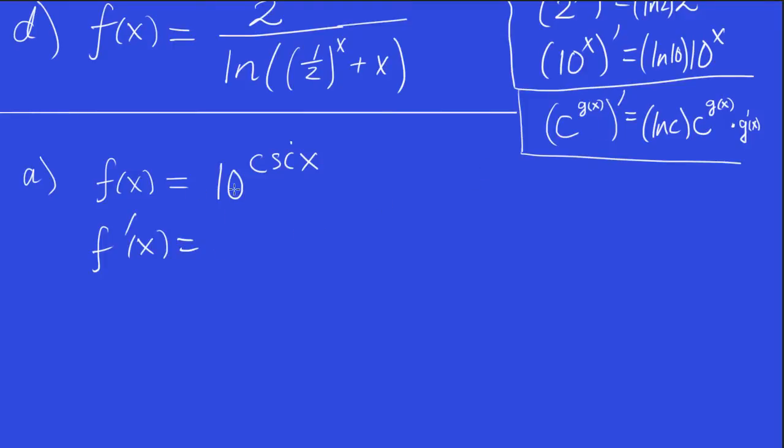So the derivative of this is an exponential, so it's basically the same thing. But we have to multiply by ln of the base. So ln 10 is out front. And then times the derivative of cosecant x. What is that again? It's minus cosecant x, cotan x. Just one of those things you have to remember. So that's not too bad for part A.